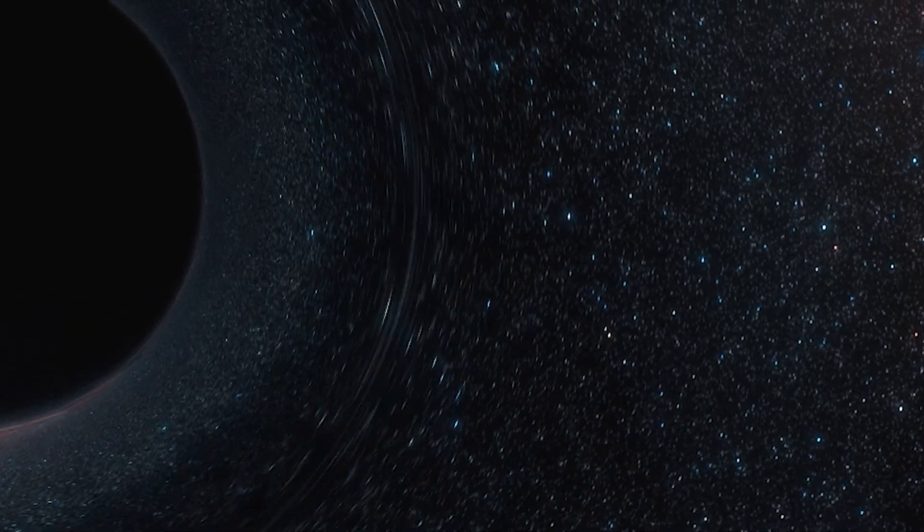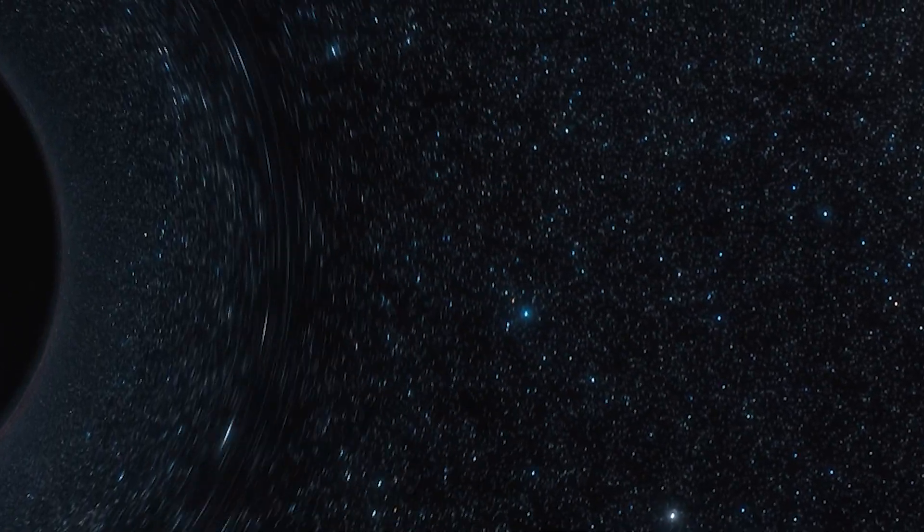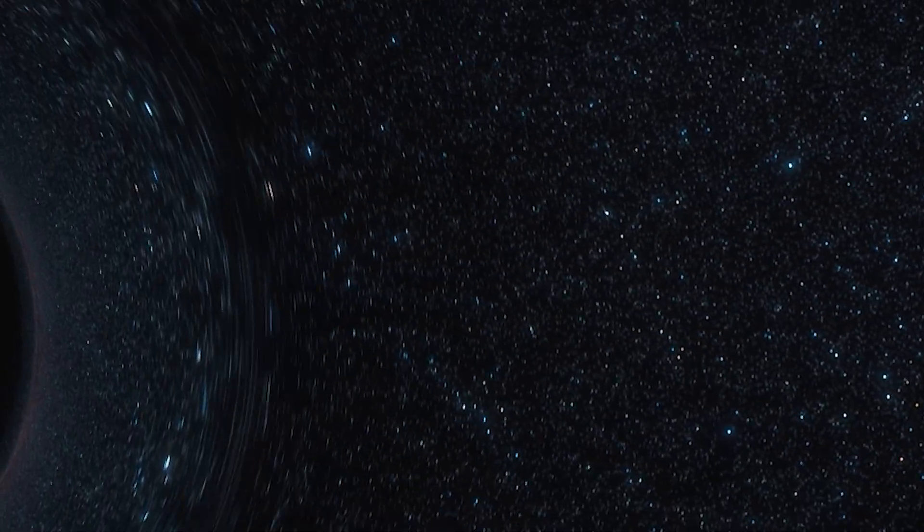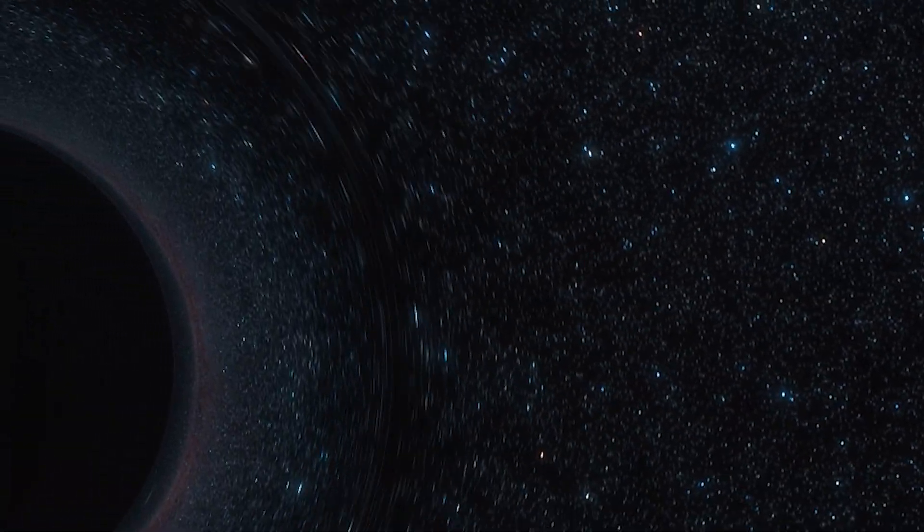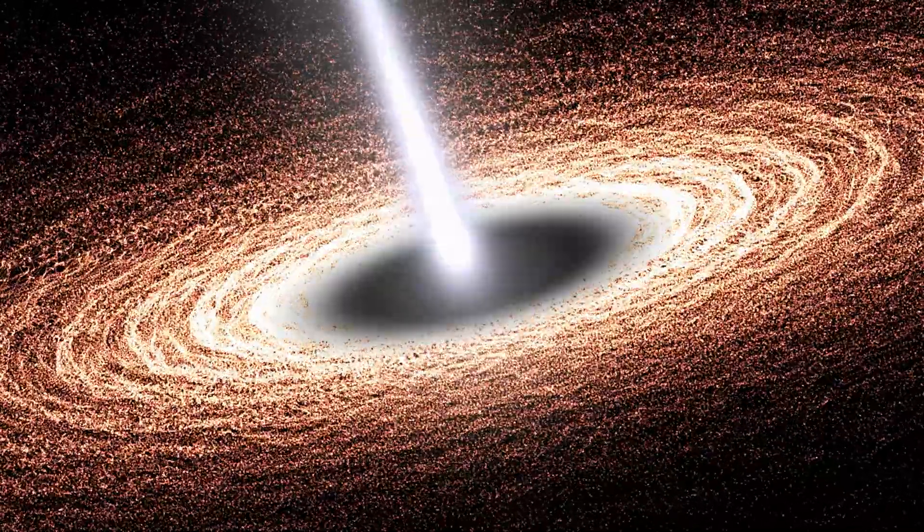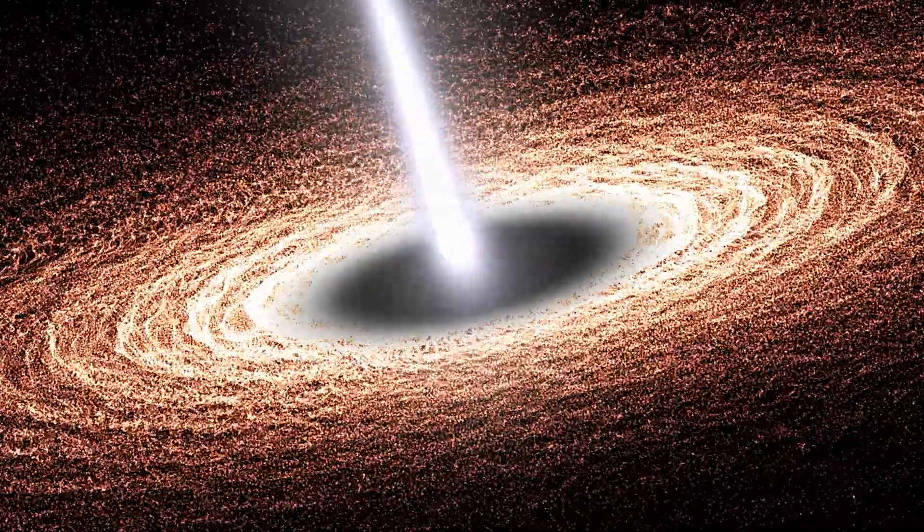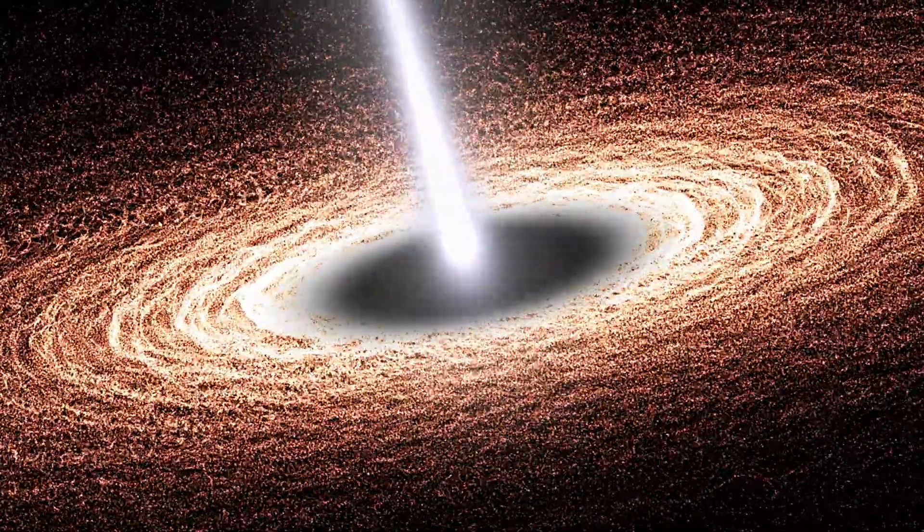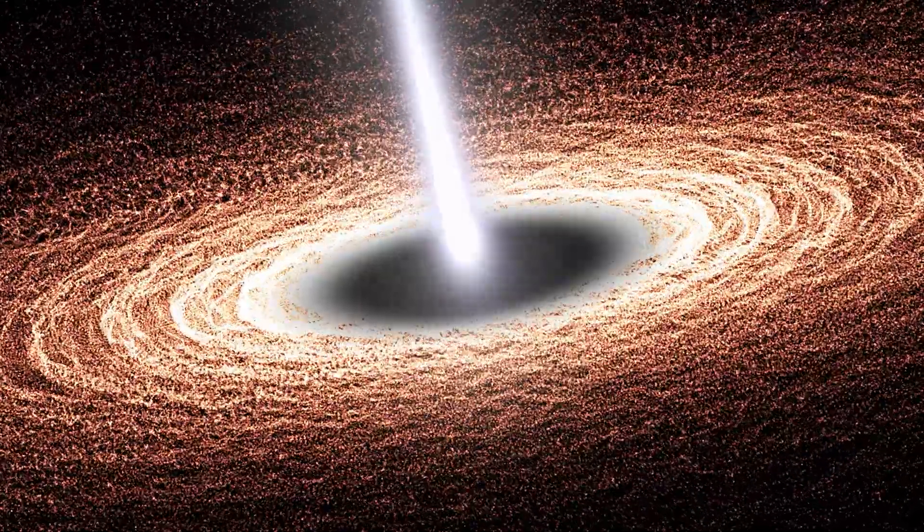The brightest known objects in the Universe are quasars. These are galaxies with a supermassive black hole in their center, which actively absorbs matter from the accretion disk that surrounds it. As a result, a huge release of energy and radiation occurs.